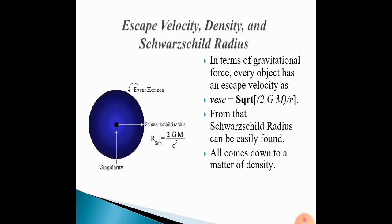Escape velocity, density, and radius. In terms of gravitational force, every object has an escape velocity. V escape is square root of 2GM divided by r. Radius can be found easily. All comes down to the matter of density.